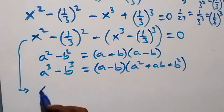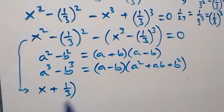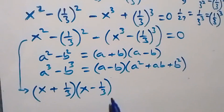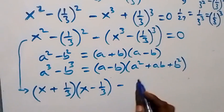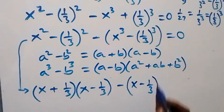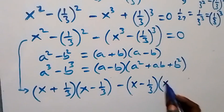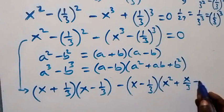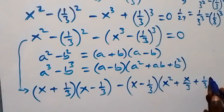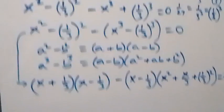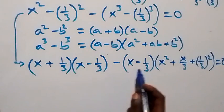This becomes (x + 1/3)(x − 1/3). Then applying the difference of two cubes, we have (x − 1/3) times open bracket x squared plus x times 1/3, that's x over 3, then plus (1/3) squared, close bracket, now everything equals zero.